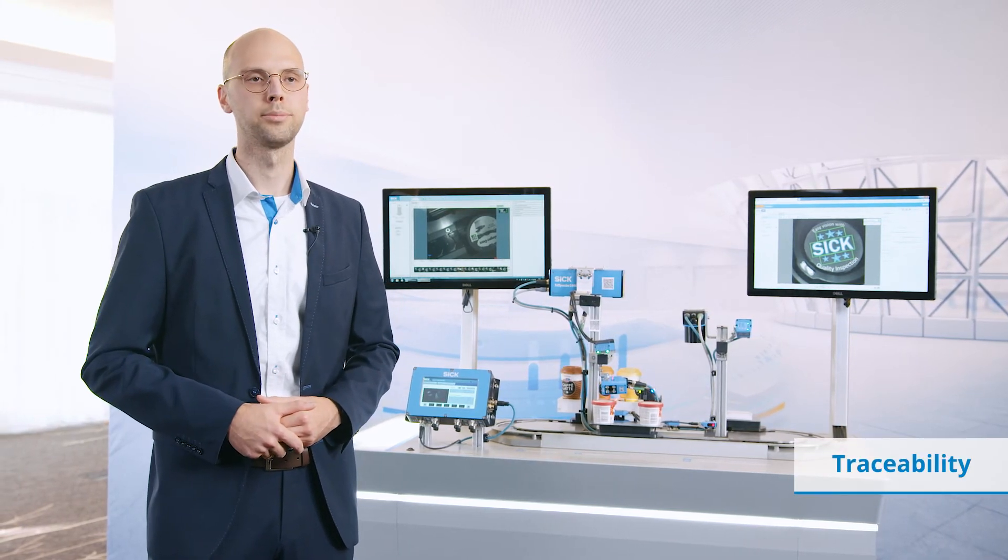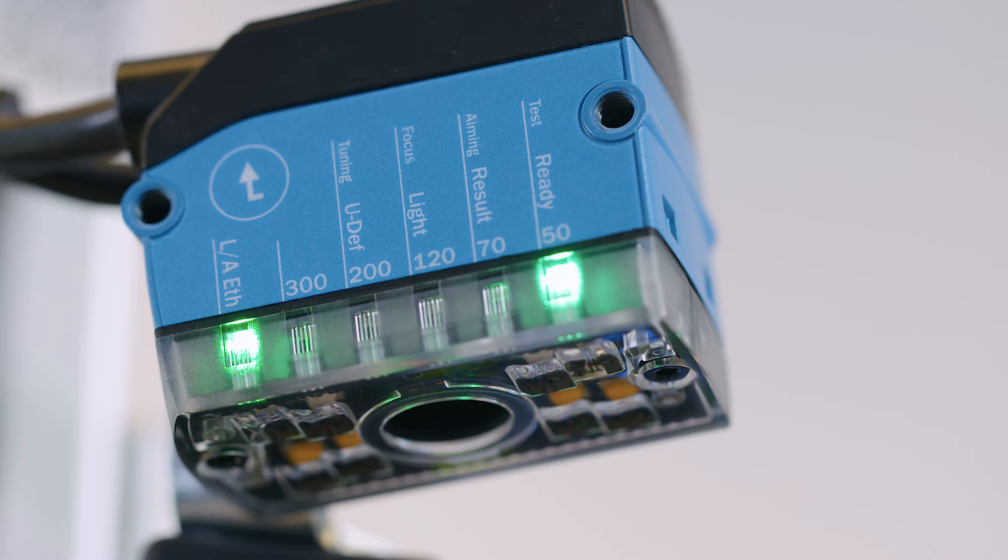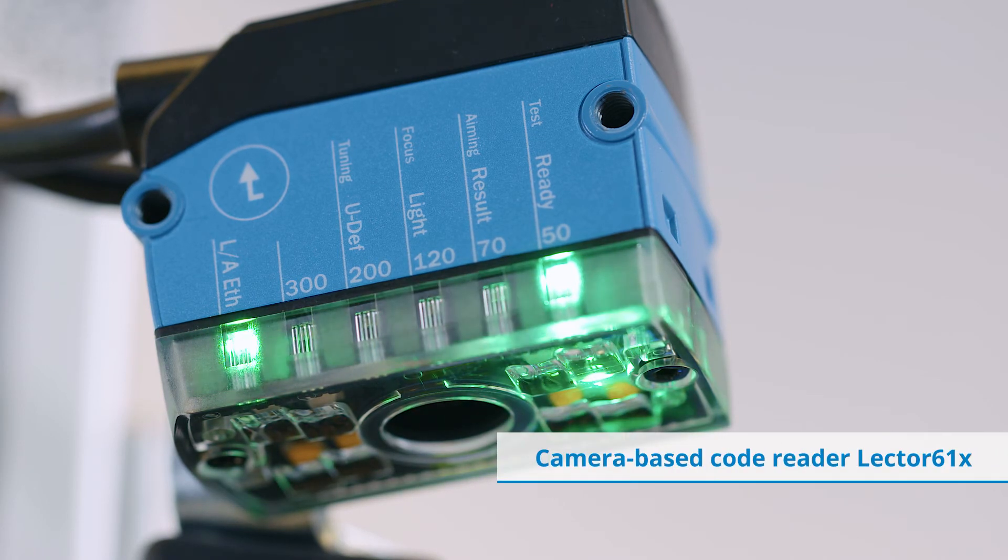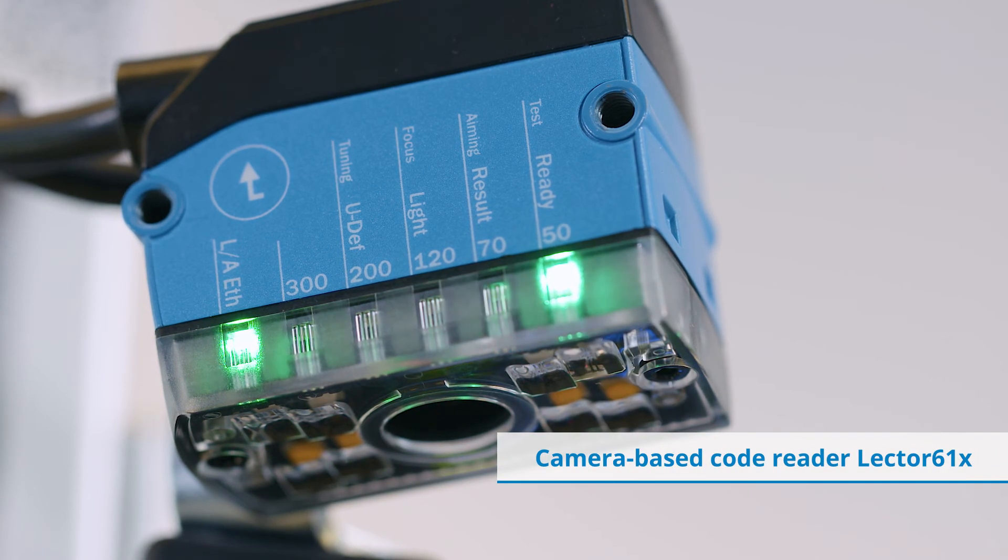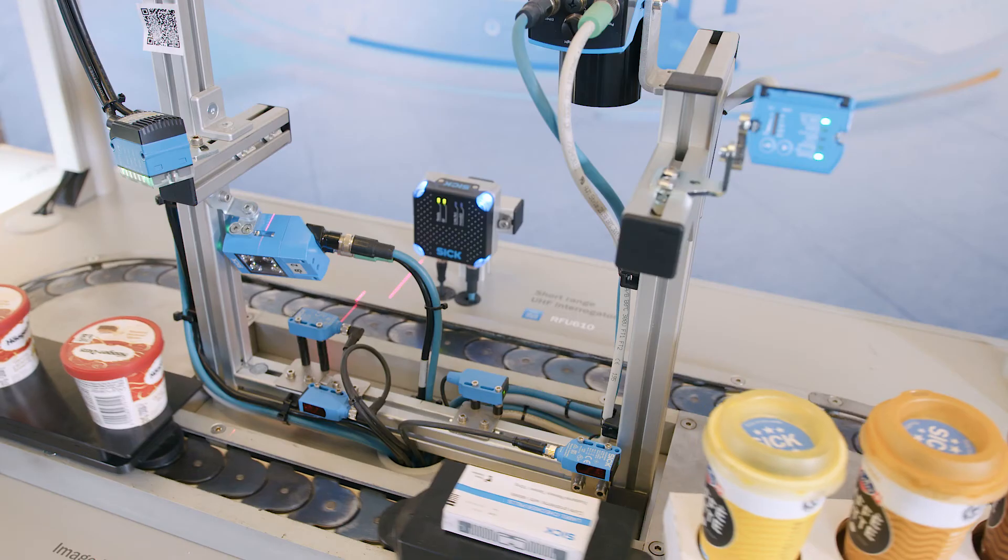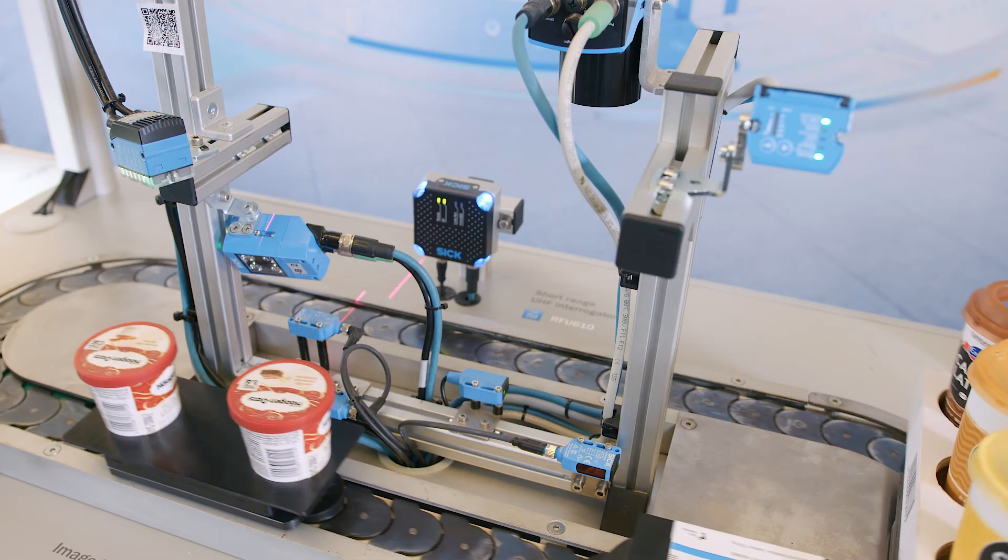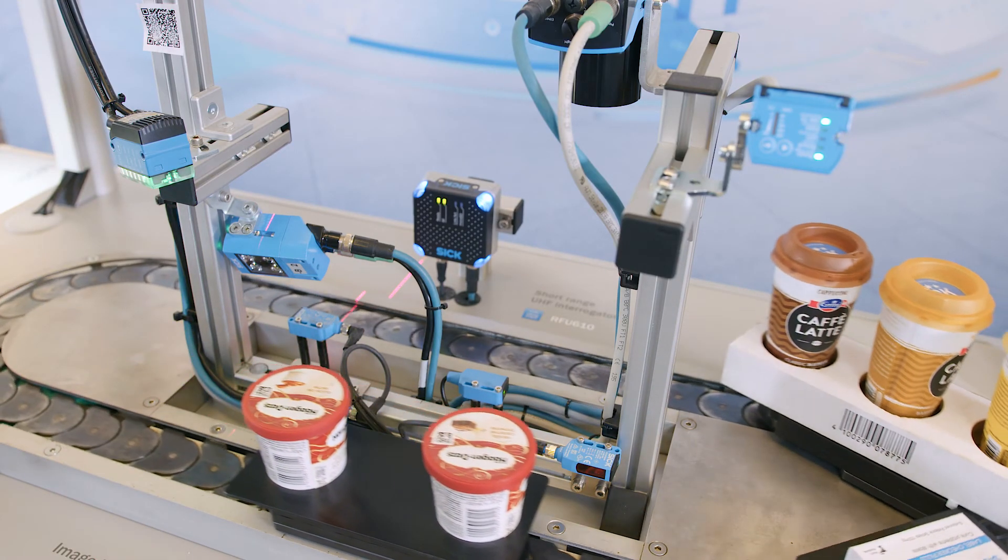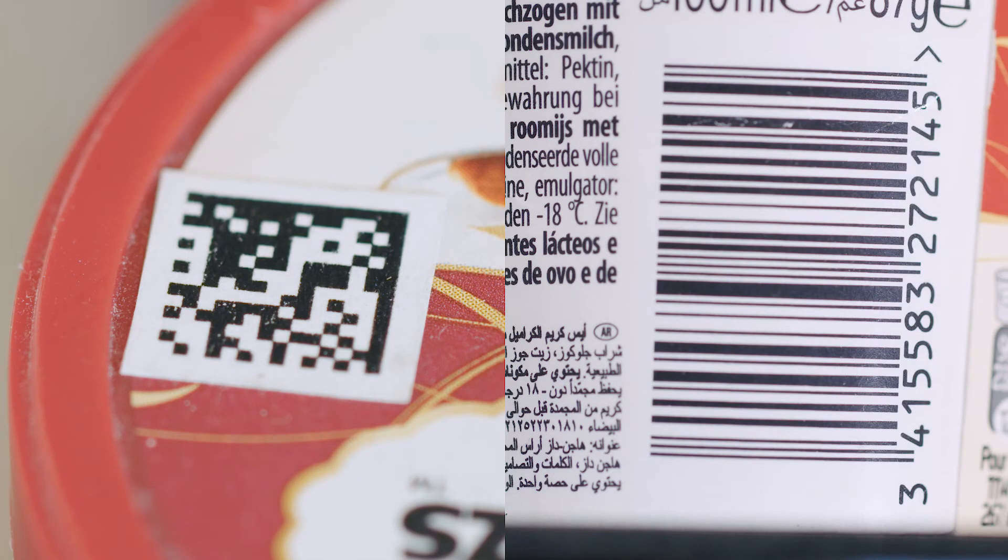To illustrate this, let's take a look at one of our latest products, the Lecter 611. In this case, the objective is to check whether the components of our product, which comprises lid and cup, match. To do so, the codes are read using two Lecter devices and the contents of both codes compared to ensure that they match.